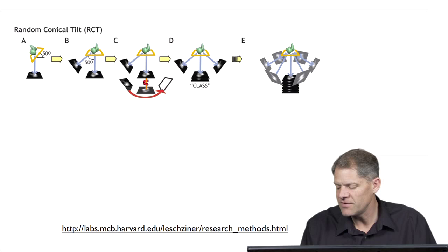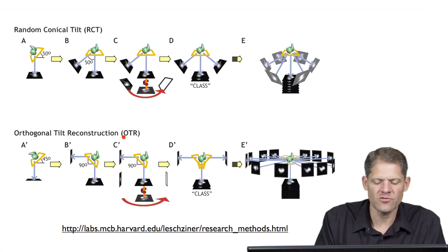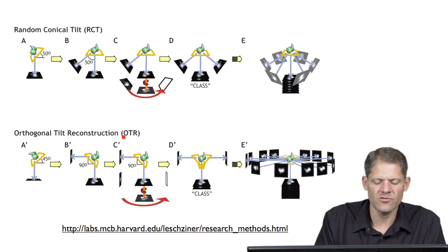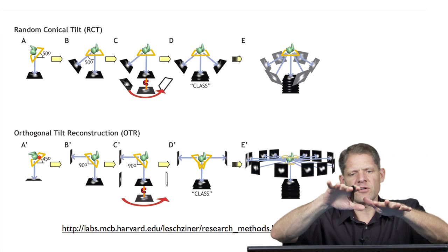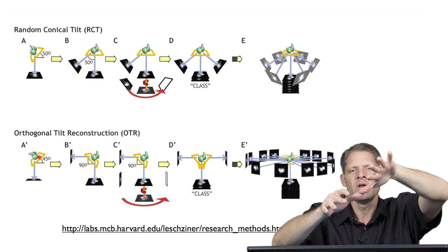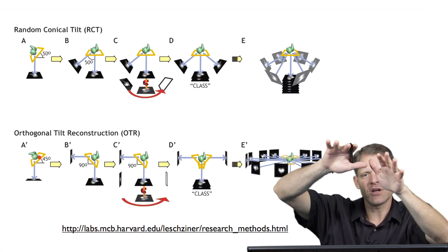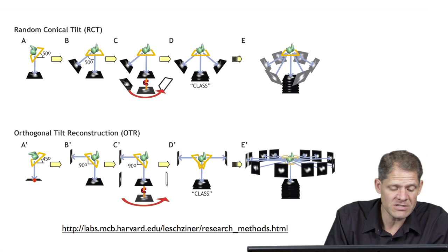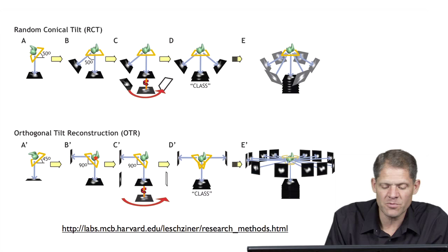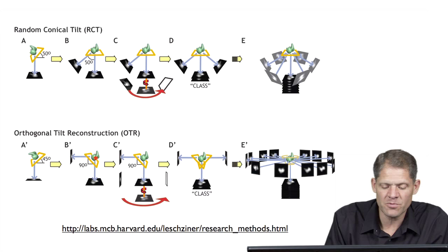Just like we explored in the case of tomography, this limitation prompted the development of a related technique called the orthogonal tilt reconstruction method. It's very similar — it starts with taking that field of particles and tilting it to say 45 degrees and recording a projection image. But then the second image is not just of an untilted sample; instead you continue tilting it to negative 45 degrees to collect the second image. So the first image is at positive 45 degrees, and then you tilt the sample all the way to negative 45 degrees to record the second image — a full 90 degree angular difference between the two images.